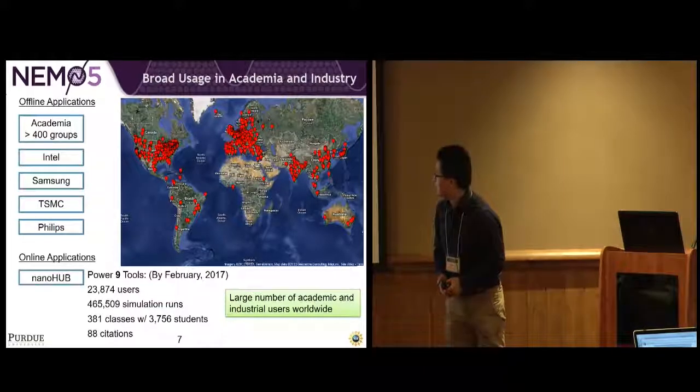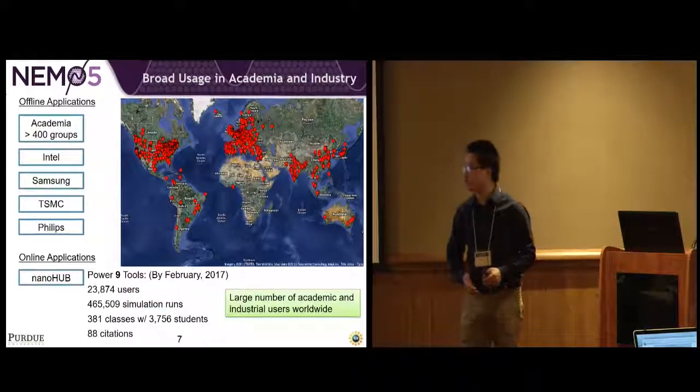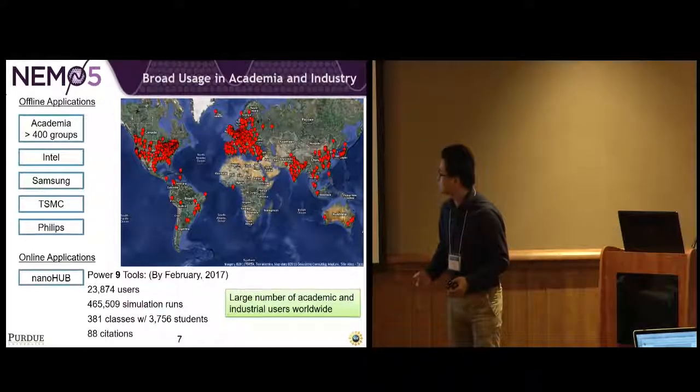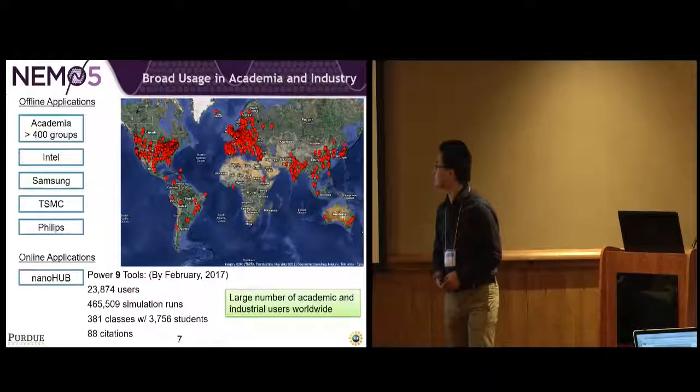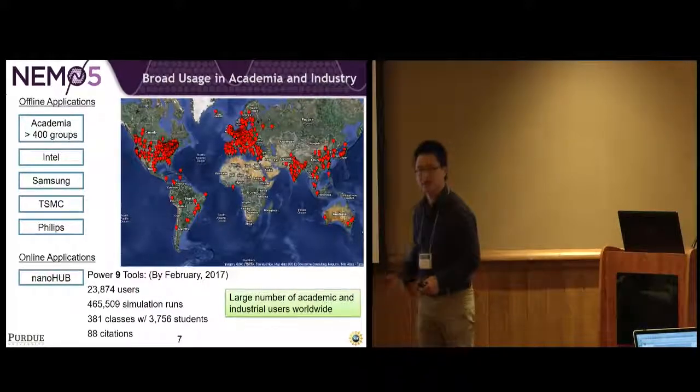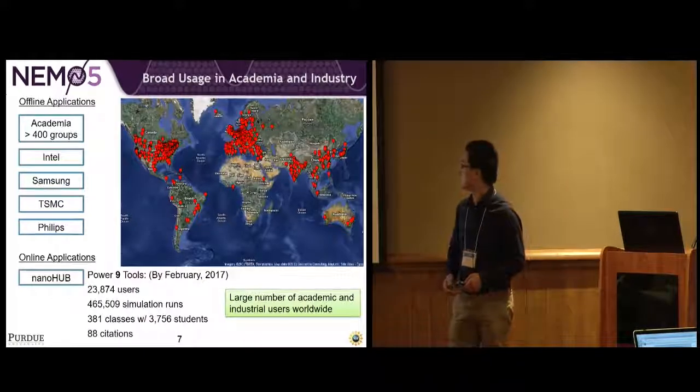NEMO5 also powers nine online tools on nanoHUB. By the end of February 2017, there are about 24,000 users, and they ran about 465,000 simulations. This map here shows the location of the users, so it's basically worldwide usage.